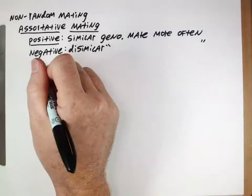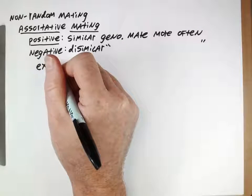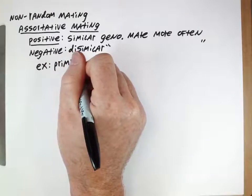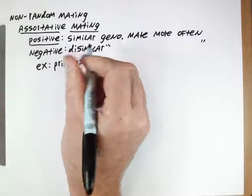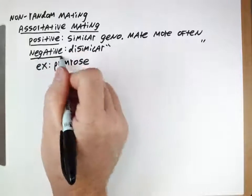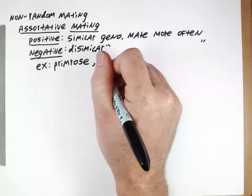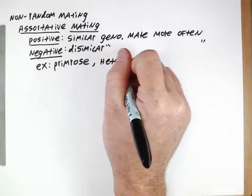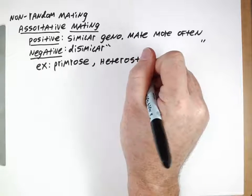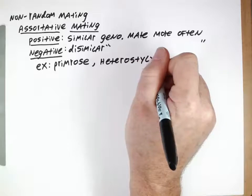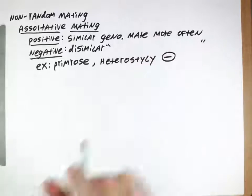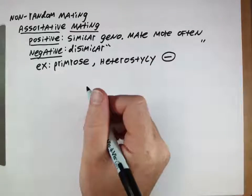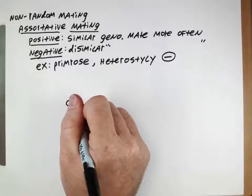An example of this is seen in a plant called the primrose. Primroses have a trait called heterostyly that's going to lead to negative assortative mating. Heterostyly works in the following way.